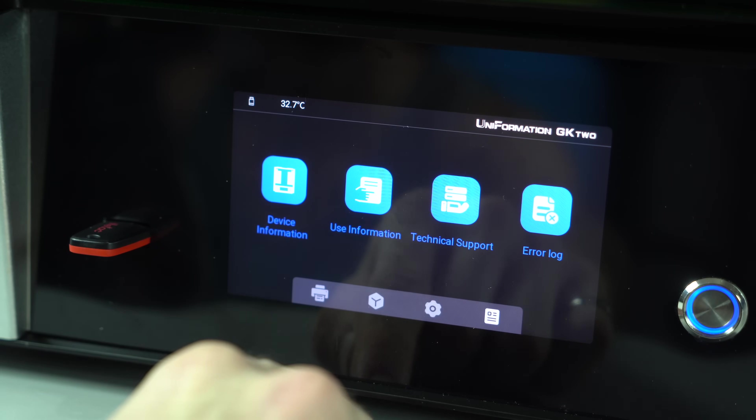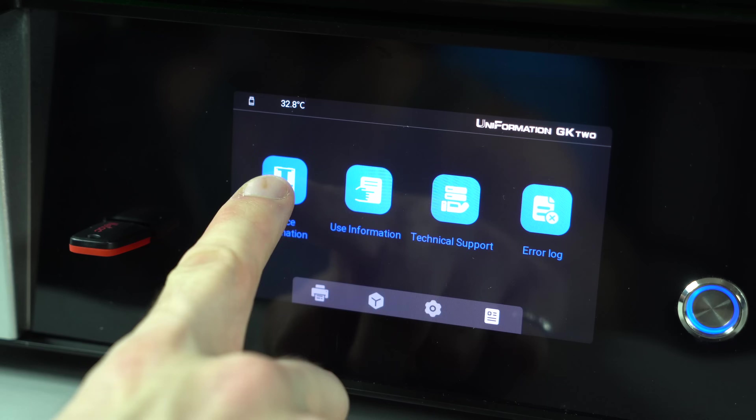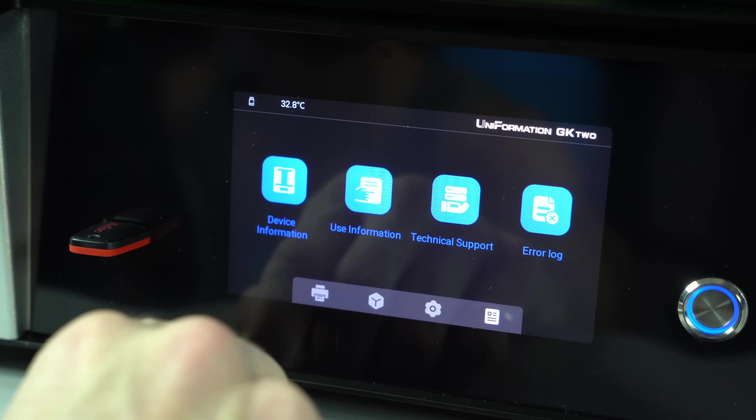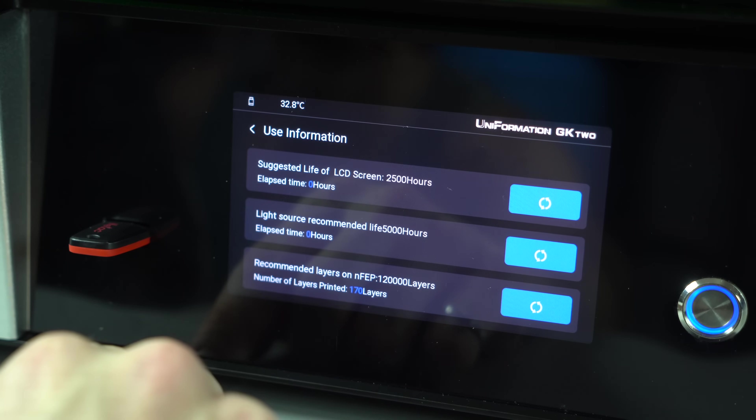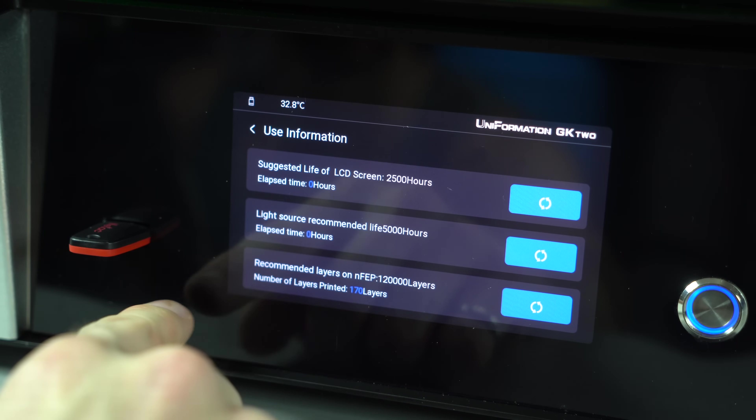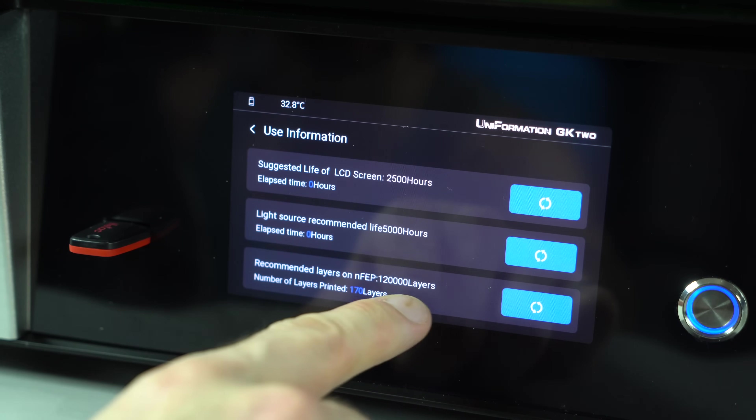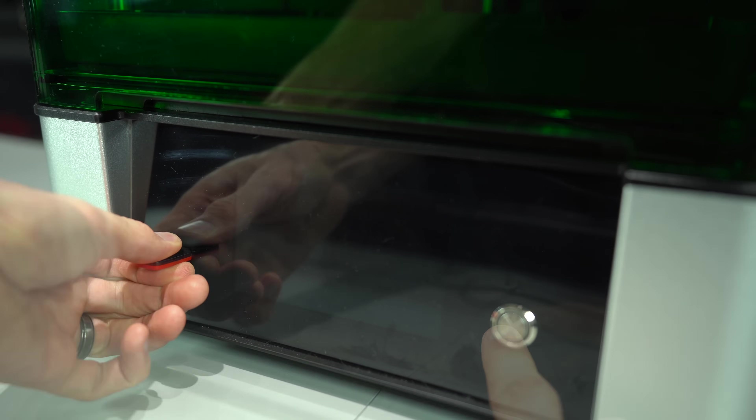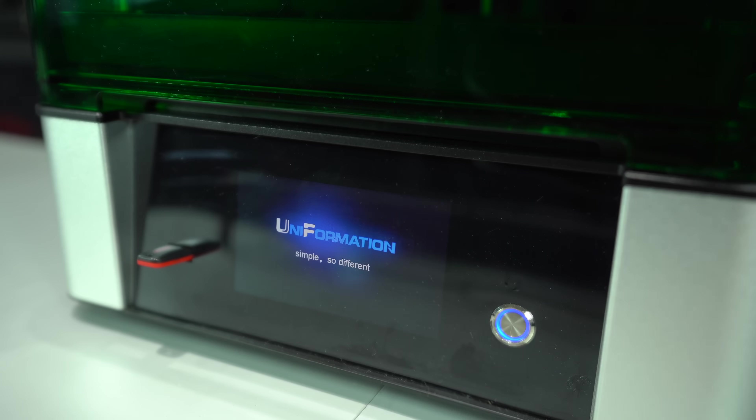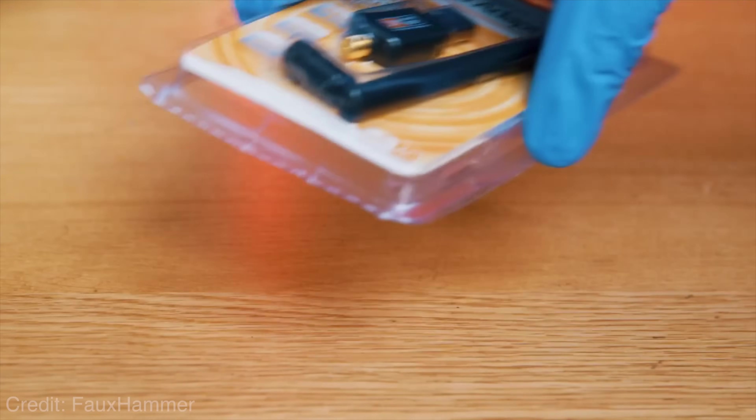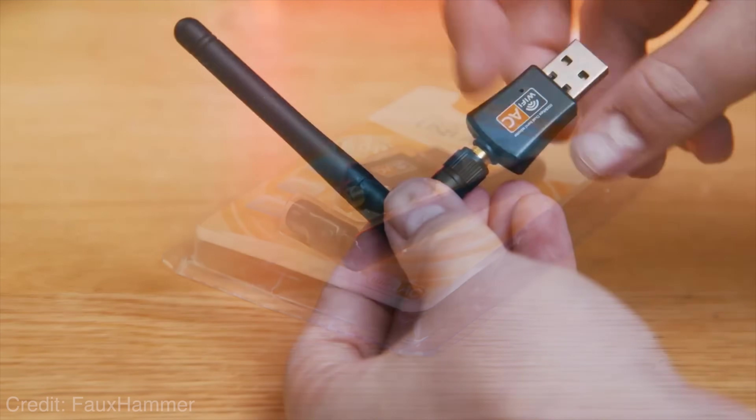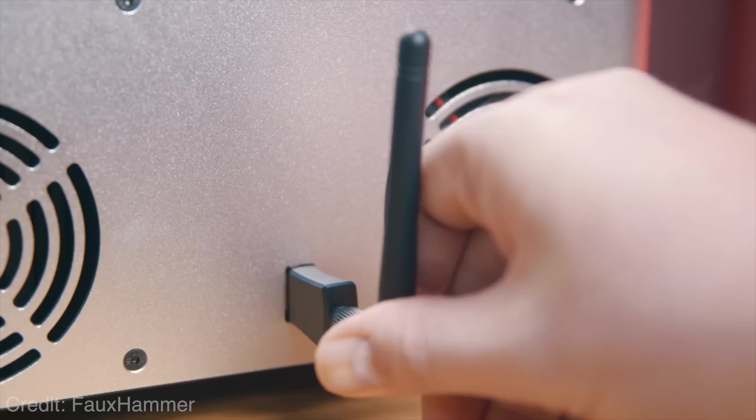Operation of the machine is accomplished via a large touch display. The menu system is basic but well organized, with some convenient usage statistics tracking the degradation of any consumables like the LCD or FEP sheet. There's a USB slot on the left and a power button on the right. Any new GK2s purchased after the release of this video will be shipped with a Wi-Fi dongle, enabling remote upload of print files.